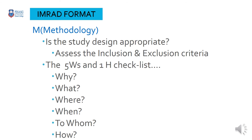M stands for Methodology. Here you consider the study population — what type of population, what type of setting, whether it is primary care or specialist care, or a specific disease condition, and whether the population covers Asian or Western. Is the study design appropriate? You assess the inclusion and exclusion criteria. You have to ask the five W's: why, what, where, when, and whom — and finally, how is the study design?